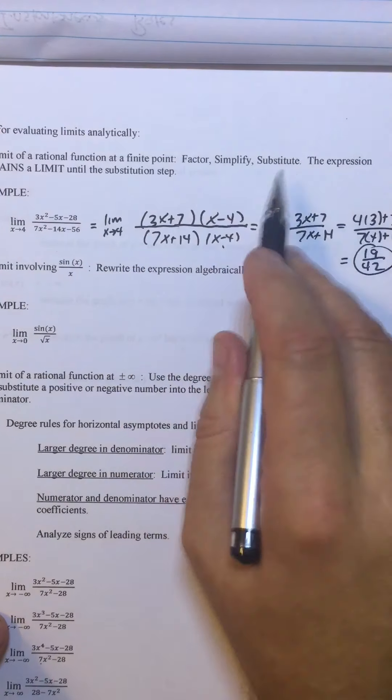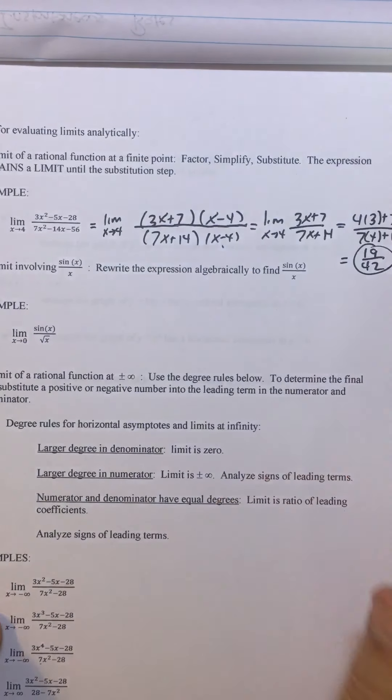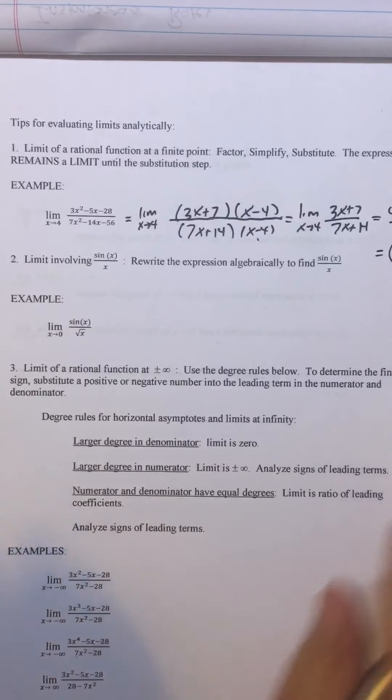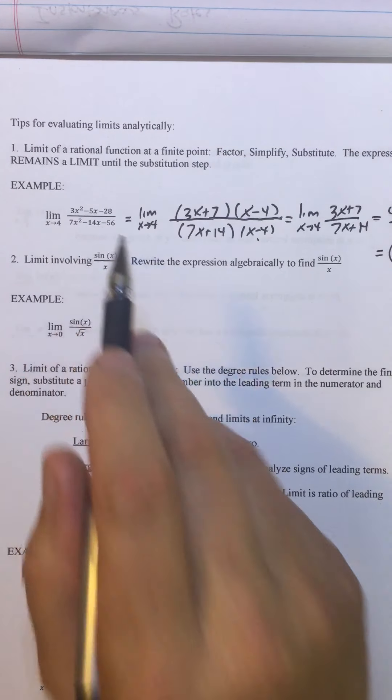Factor. Simplify. Substitute. Limit. Limit. Not a limit. Not a limit. You get graded on all that. That's limit of a rational function. This is a rational function at a finite point.